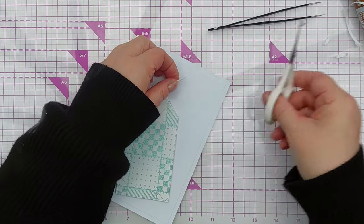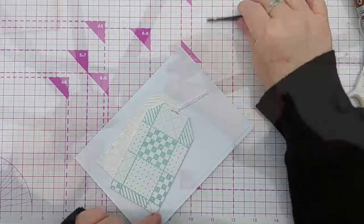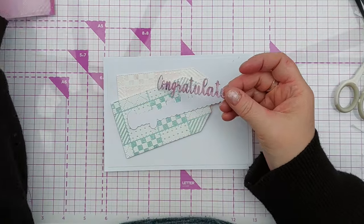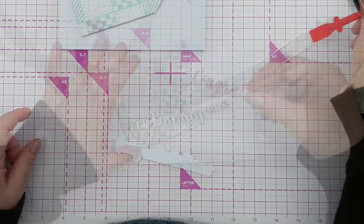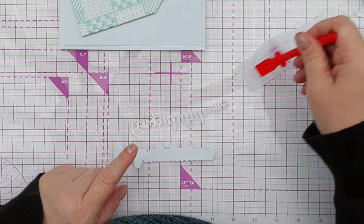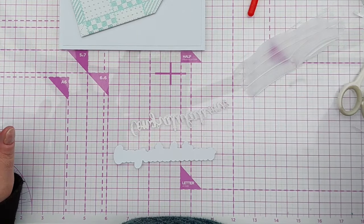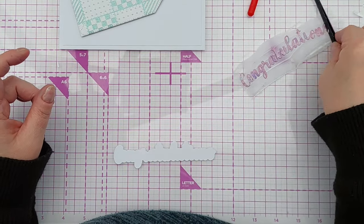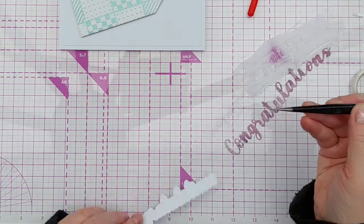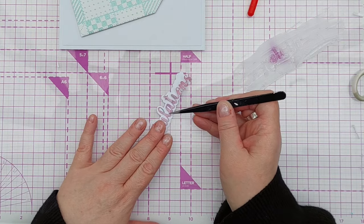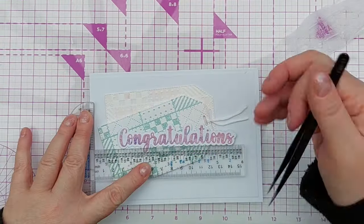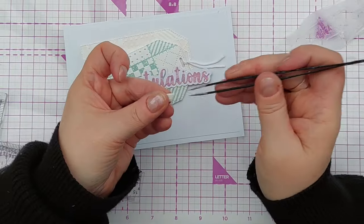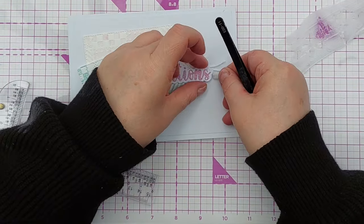For my sentiment I've chosen a congratulations word that I die cut from that purple panel that we made, and I've also cut the shadow out of white cardstock just to help it stand out. So I'm going to pop my congratulations in some glue and then stick it on its shadow.